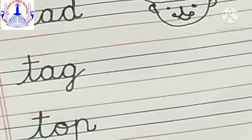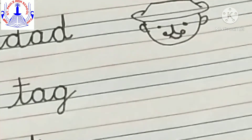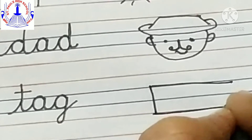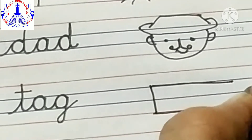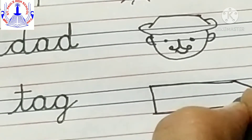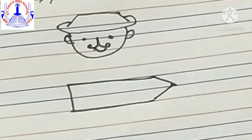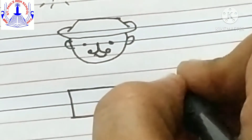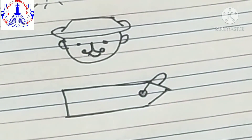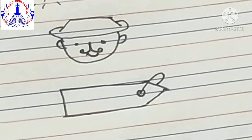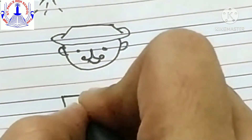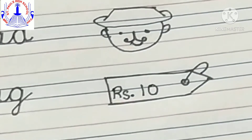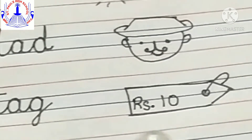Now the next is tag — T-A-G, picture of tag. First make a rectangle — two sleeping lines and a standing line. Then over here we have to make a triangle shape and join it. And make a circle. Tag has a thread or a plastic thread. Then over here write R-S, dot, one zero — ten. It is a price tag — T-A-G, tag, picture of tag.